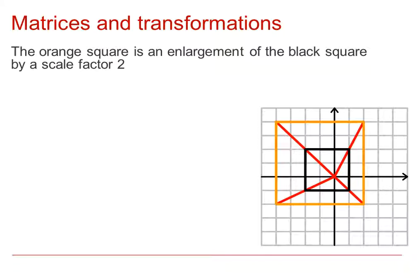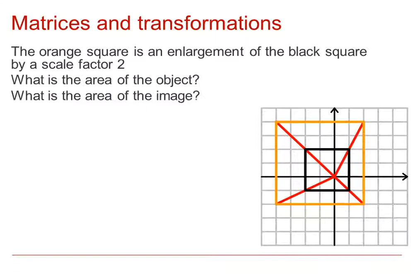In this example, the orange square is an enlargement of the black square by a scale factor of 2. We need to consider what is the area of the object and what is the area of the image. We can see that the area of the original black object is 9 squares and that the orange image is 36 squares.